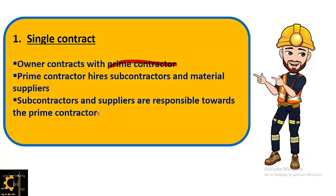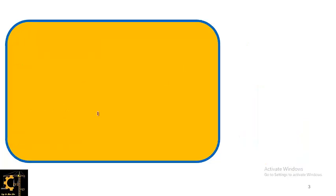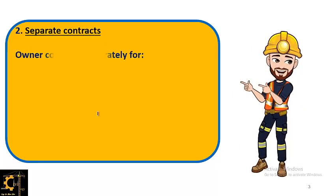Subcontractors and suppliers are responsible towards the prime contractor — they have nothing to do with the owner. The prime contractor is directly responsible to the owner. So the prime contractor and owner are in contact with each other, while subcontractors and material suppliers have no direct relationship with the owner or client.